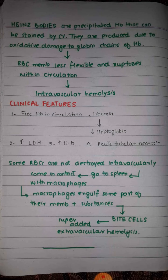The clinical features of hemolytic anemia from G6PD deficiency are the same general features of hemolytic anemia: free hemoglobin in the circulation due to intravascular hemolysis, increased unconjugated bilirubin causing mild jaundice, increased lactate dehydrogenase, and acute tubular necrosis. In the next lecture we will discuss hemolytic anemia occurring due to hemoglobin defects.